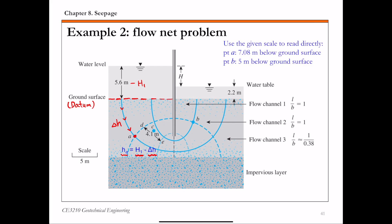For point B, water experiences five potential drops from upstream to reach it — each time water passes one equipotential line, the potential is lost by delta H. So when water reaches point B, there have been five potential drops. Therefore HB equals H1 minus five times delta H. We can calculate HA and HB once we know delta H.